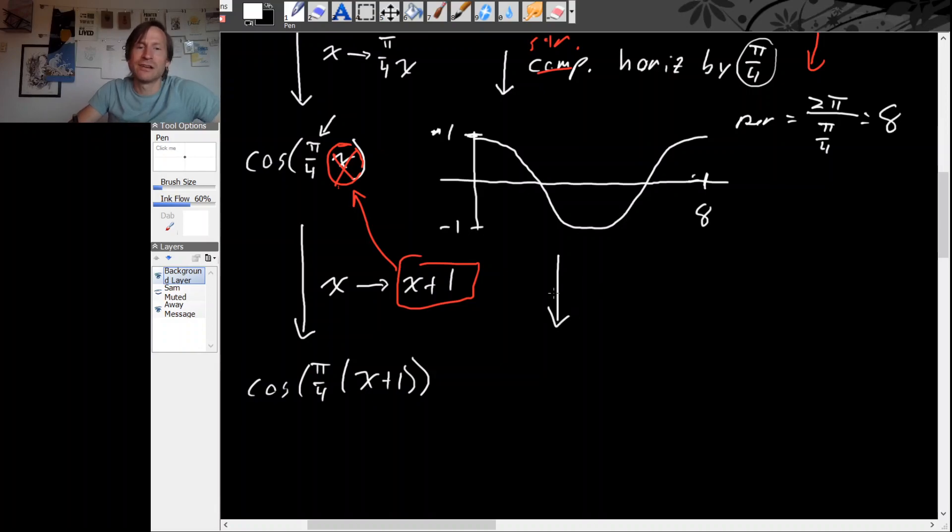So there should be parentheses here to indicate that it's this entire chunk x plus 1 that we're putting in all as a single piece. And then for the graph, replacing x with x plus 1, that shifts left by one unit.